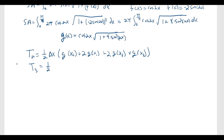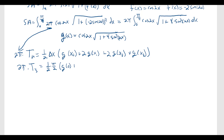Our delta x is pi over 12 — and remember, this is just for the integral part; we still have that 2 pi sitting outside. So we'll have g(0) plus 2·g(pi over 12) plus 2·g(pi over 6), which is 2 pi over 12, plus g(pi over 4), which is 3 pi over 12.